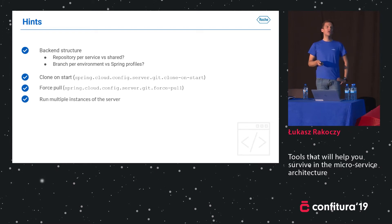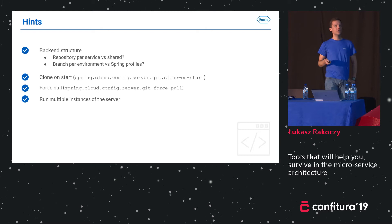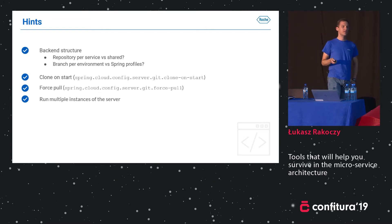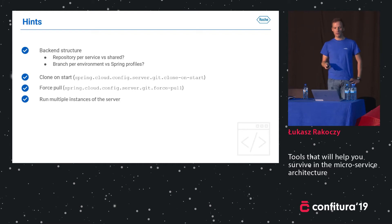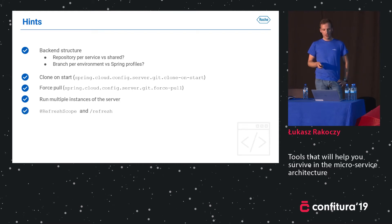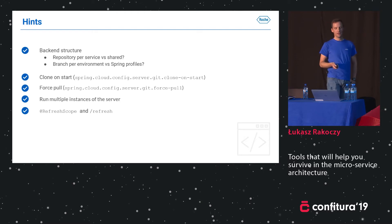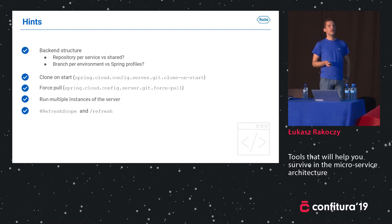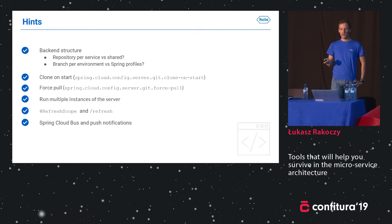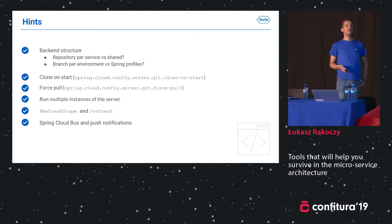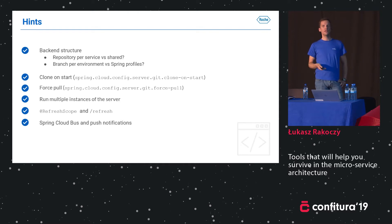Of course you want to make the configuration server resilient. You've made it the central place of your application and all components depend on it — so run multiple instances behind a load balancer. This is extremely important: your system will not work without the configuration server. If you use Spring Boot Actuator, remember you have the refresh endpoint and refresh scope annotation, so you can refresh properties without restarting components. And if you're using Spring Cloud Bus, you can use push notifications so all instances refresh their properties when required.